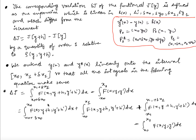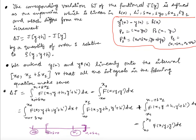So basically we have something like this: this is your x₀, this is your x₀ plus δx₀, this is your x₁, this is your x₁ plus δx₁. This integral is from x₀ to x₁, but this boundary part is not there, so I have to subtract the term from x₀ to x₀ plus δx₀.